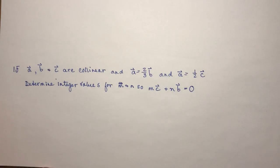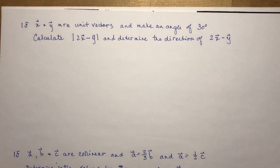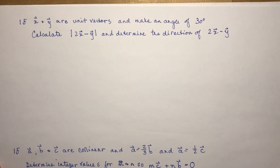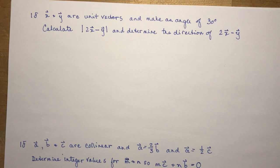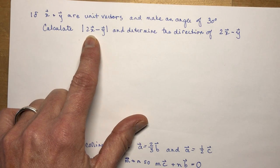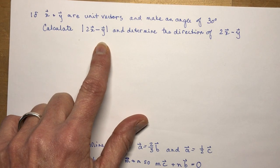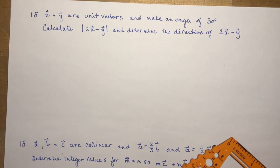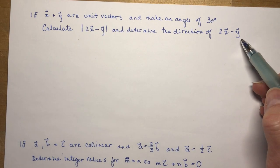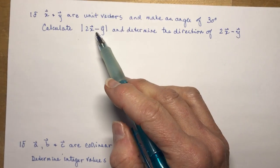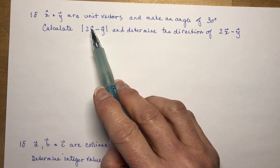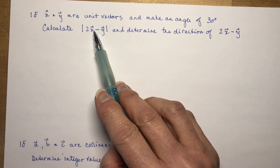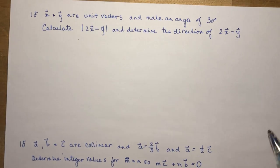That was a lot of words. Let's do some math — that's always more fun. The problem says: if X and Y are unit vectors and make an angle of 30 degrees, calculate the magnitude of 2 vector X minus vector Y and determine the direction of 2X minus Y. Make sure you watch when reading the question: absolute value signs mean magnitude — that's the length of the resultant.